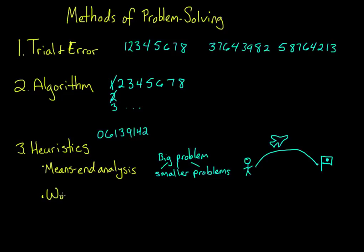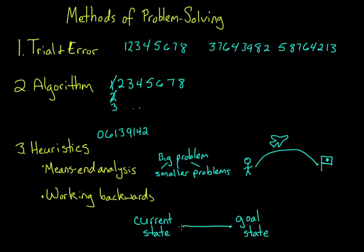A second heuristic is working backwards. Now with means-end analysis, we were trying to work from our current state toward our goal state. With working backwards, however, you start with your goal state and use it to suggest connections back to your current state. This strategy is commonly used in mathematical proofs. Another example of it is if you've ever done a maze and started at the end and worked your way backwards toward the beginning.